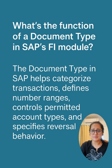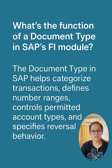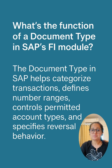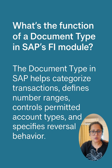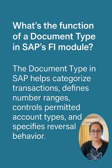Document types are two-character codes that classify financial transactions in SAP. Their purpose is: first, to assign number ranges — for example, invoices and credit memos don't overlap. Second, to limit account types — for example, vendor only, customer only, or GL only.